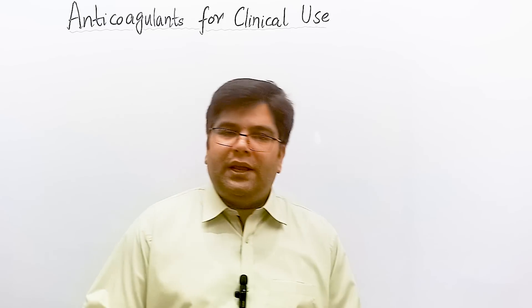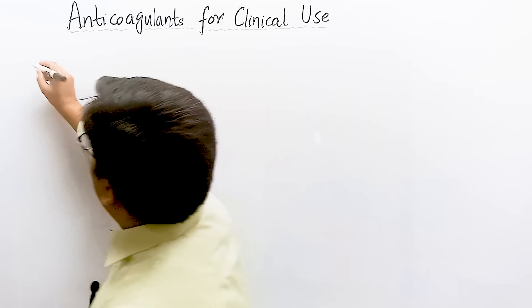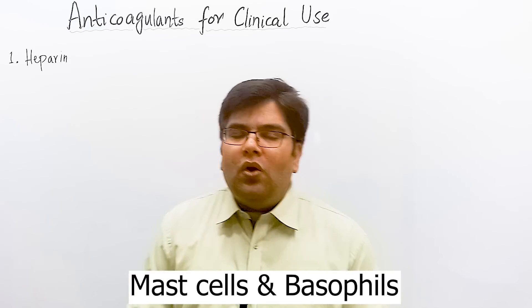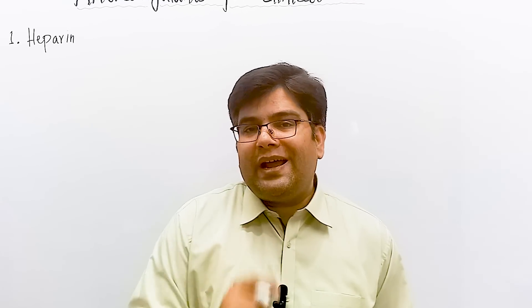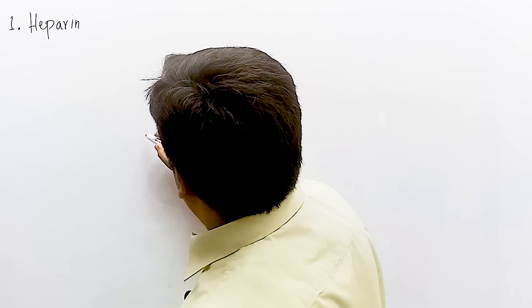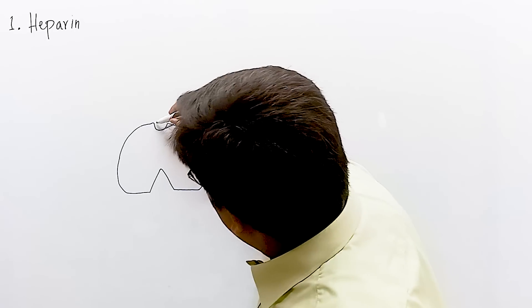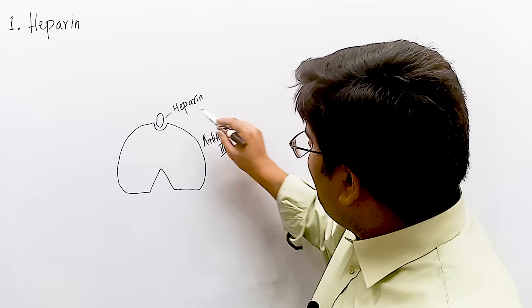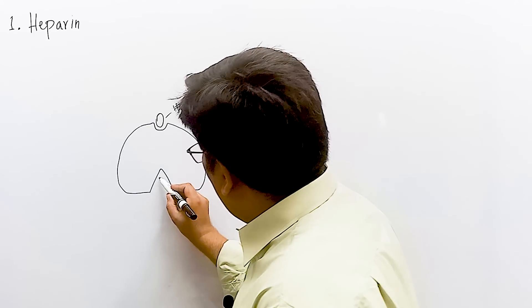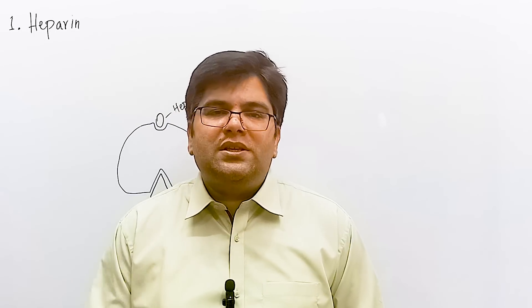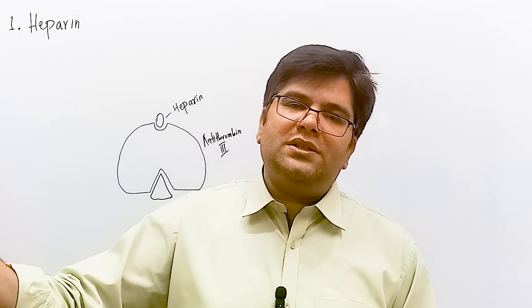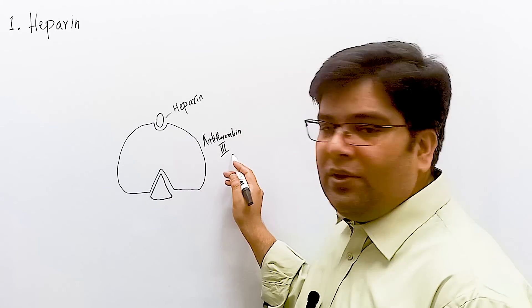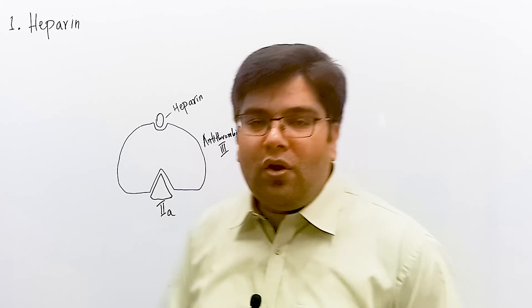The first anticoagulant we will discuss is heparin. Heparin is a natural anticoagulant produced by mast cells and basophils. Heparin alone has almost no anticoagulant activity; however, heparin acts as a co-factor for antithrombin 3, which is a protein in our plasma. When heparin binds with antithrombin 3, this complex becomes activated and removes thrombin. The removal of thrombin by antithrombin 3 is enhanced up to hundreds to thousands of fold by heparin.